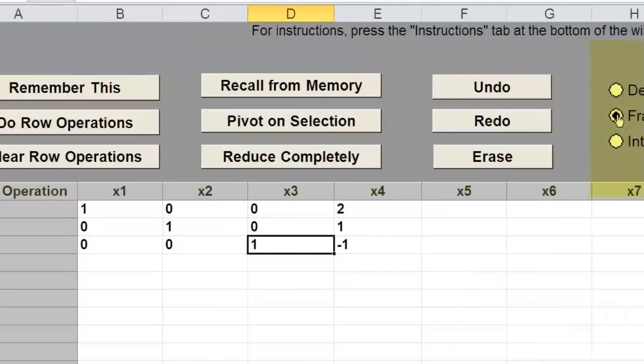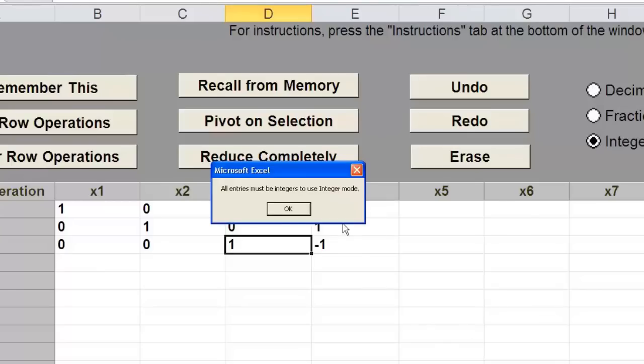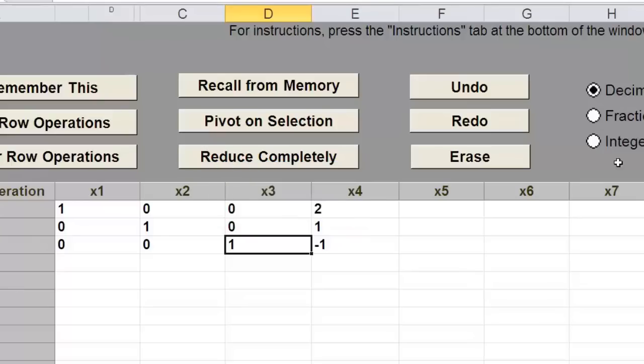I want you to note, over here on the right hand side, there are three buttons that can select it. I operated on the fraction button. But I could have clicked on the decimal, in which case each element would have been written as a decimal. The results, instead of being fractional, would have been decimal in size. This concludes the video for demonstrating XL Pivot to reduce Gauss-Jordan.